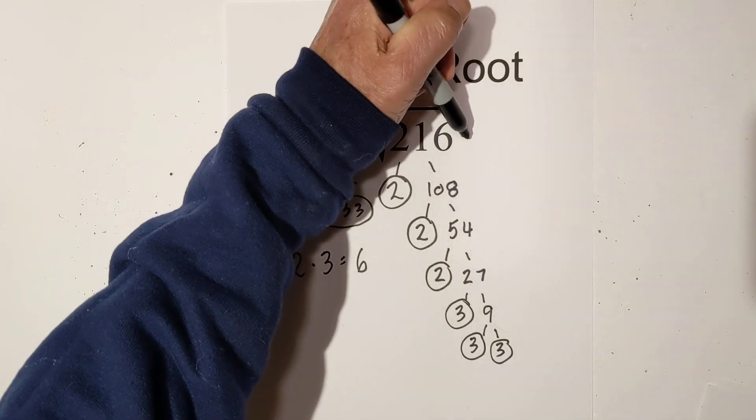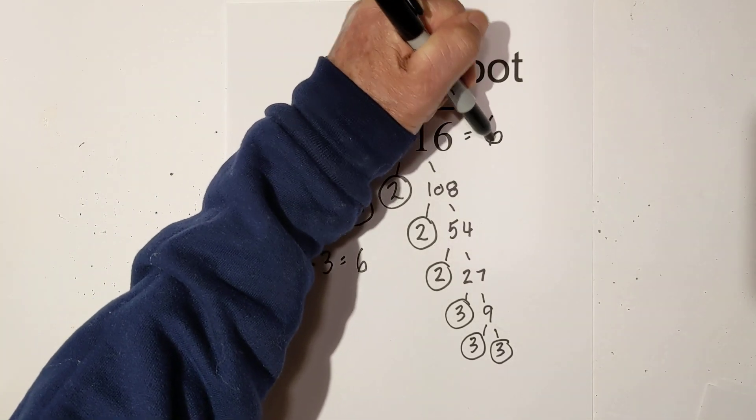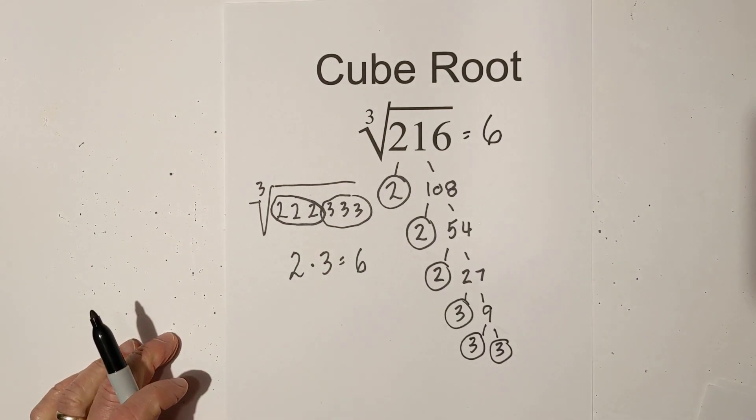So the cube root of 216 is 6. I hope that helps. And remember kindness multiplies kindness. Be kind to someone today.